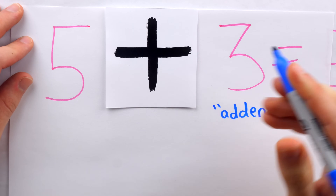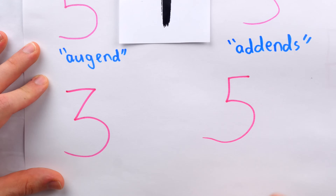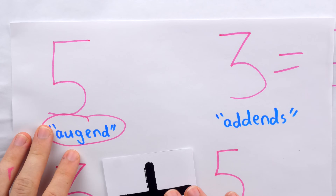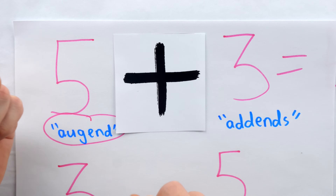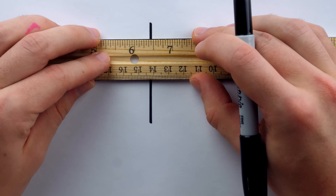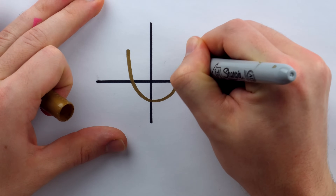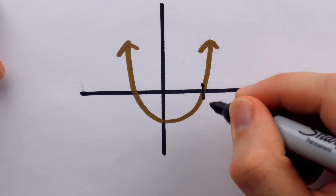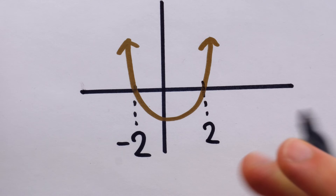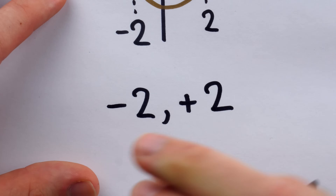The fact that we can add things in whatever order we desire without changing the result makes using a specific word for the first thing in the sum a little pointless. In this context, the plus symbol is being used as a binary operator — bi meaning two — operating on two numbers. Occasionally the plus sign may also be used as a unary operator on a single number. For example, consider a parabola crossing the horizontal axis at positive two and negative two — the roots. Writing them as minus two and plus two uses the plus symbol as a unary operator to indicate positiveness.